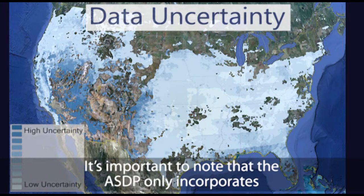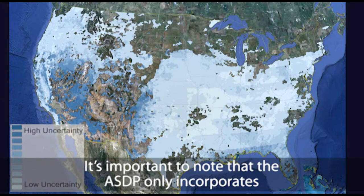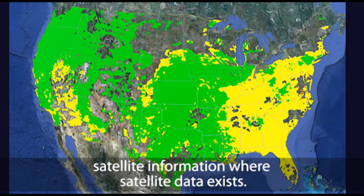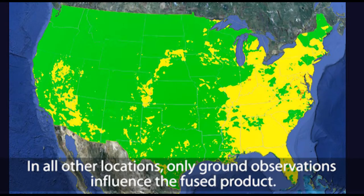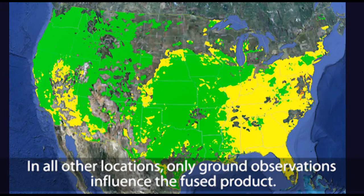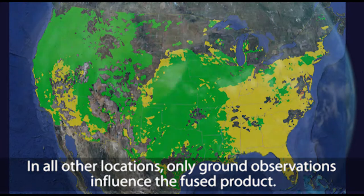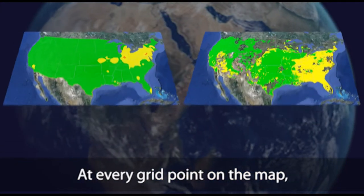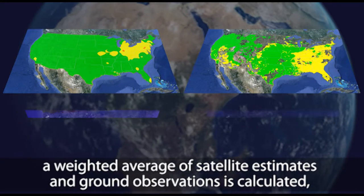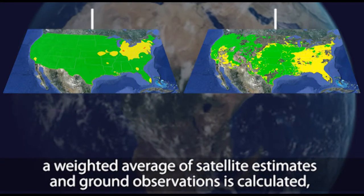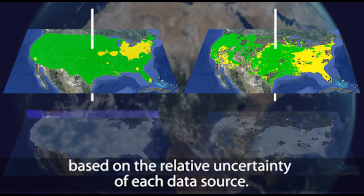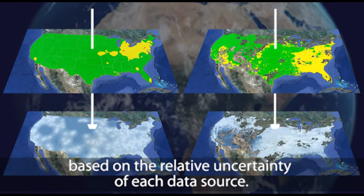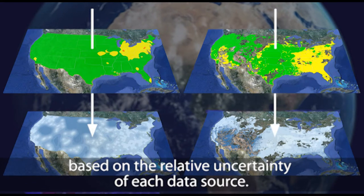The satellite estimates also have uncertainty associated with them. It's important to note that the ASDP only incorporates satellite information where satellite data exists. In all other locations, only ground observations influence the fused product. At every grid point on the map, a weighted average of satellite estimates and ground observations is calculated based on the relative uncertainty of each data source.